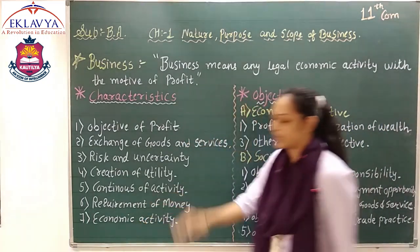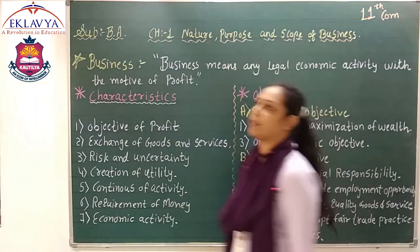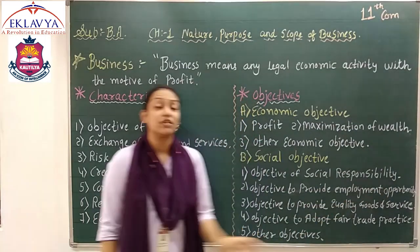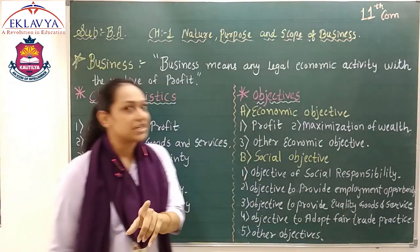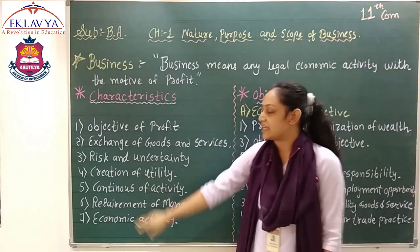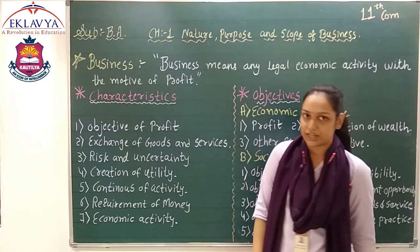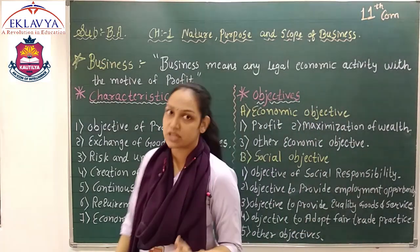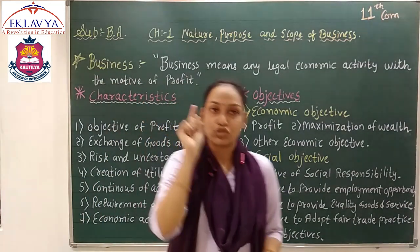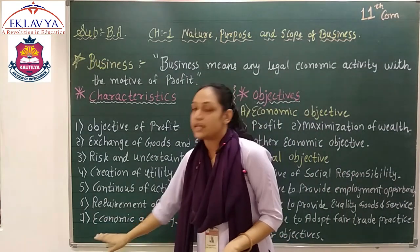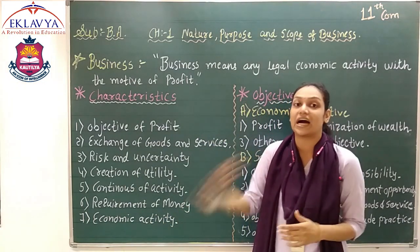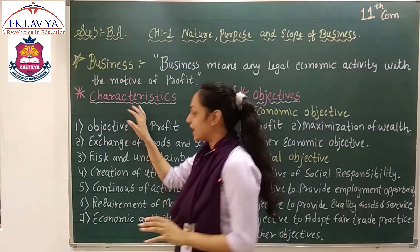The seventh characteristic is that business is an economic activity. We have already read this in the definition — any legal economic activity means it is related to money. So it is simply that business is an economic activity; we cannot call it a non-economic activity. If anyone asks which type of activity business is, keep in mind that it is an economic activity. So these are all the characteristics of a business, and we have completed them.